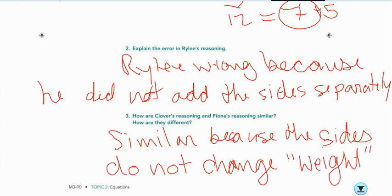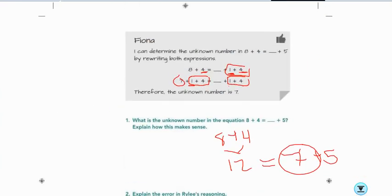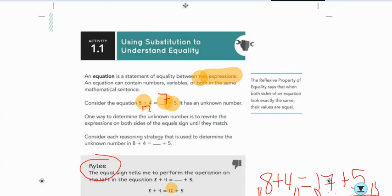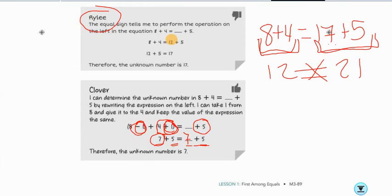And so they're similar because they're maintaining equality. They're similar because the sides do not change weight. So if we think about the side as being how heavy is it, in this case, Fiona, she hasn't changed the weight of the side. All she did was change the numbers. So it's like she had a 5-pound weight, and she broke it down into a 4-pound weight. Same thing over here with Clover. He didn't change the weight of the sides. He just changed the numbers that are equal to it.